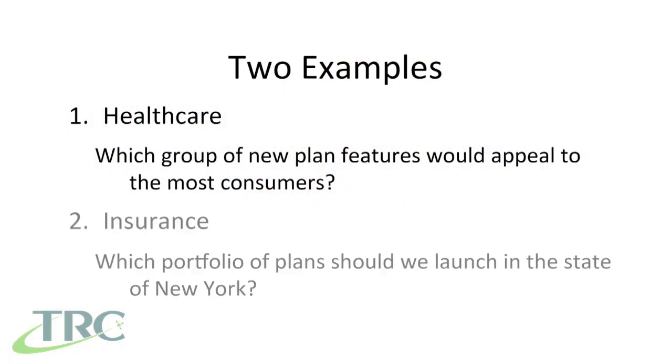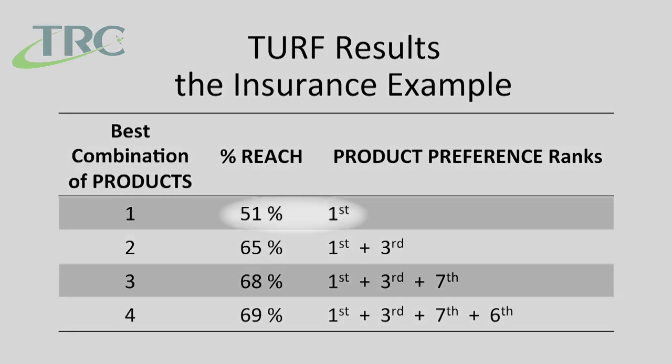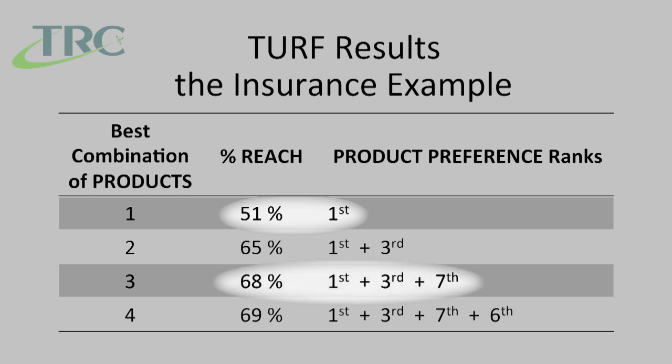A second example was work we did in the insurance market. A client wanted to know which portfolio of plans to launch in the state of New York. We used a technique called discrete choice conjoint, which goes a step further and focuses on entire product portfolios rather than individual features. Participants chose preferred plans built from common insurance plan attributes — deductibles, copayments, and out-of-pocket costs. We then created ten possible plans using a what-if simulation tool and evaluated preferences for each. The most popular plan configuration reached the most people, but in combination with the third and seventh most popular plan options, that was really the optimal reach. These two examples illustrate how choice-fueled TURF analysis can help you identify niche opportunities and make better line optimization decisions.